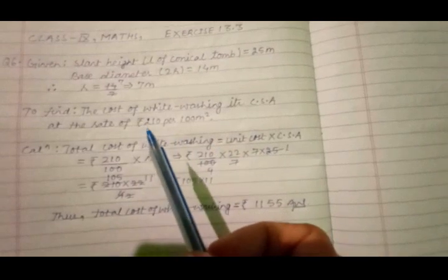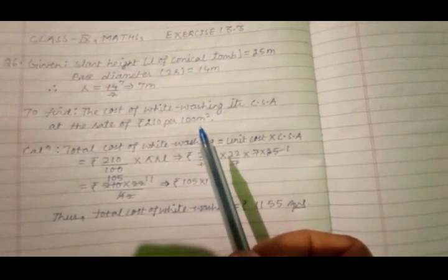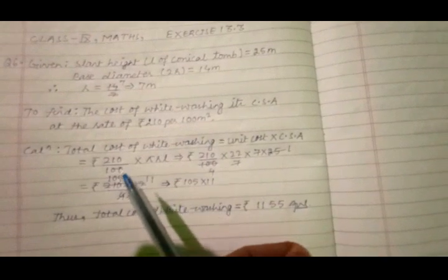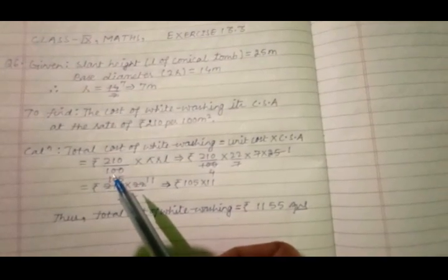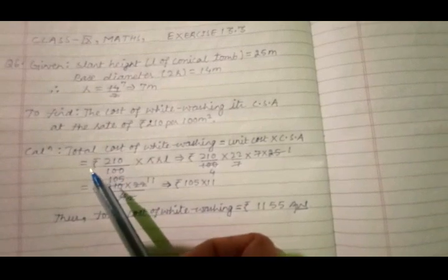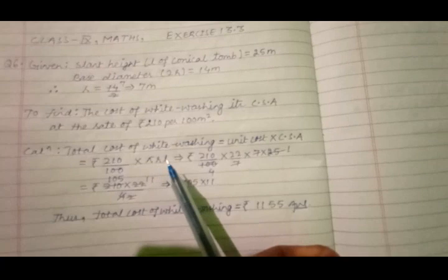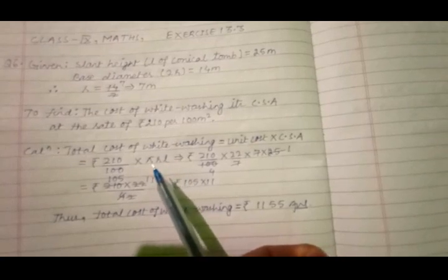So as rupees 210 is paid for whitewashing 100 square meter of CSA, the cost to be paid for whitewashing 1 square meter of that CSA becomes rupees 210 upon 100. Into CSA of tomb we have pi RL.